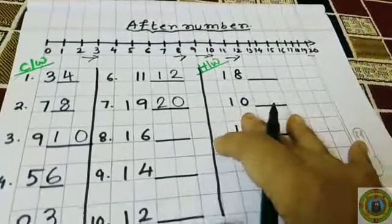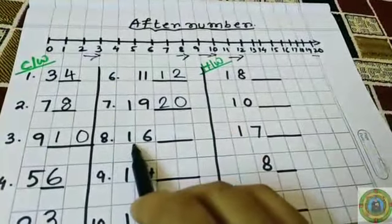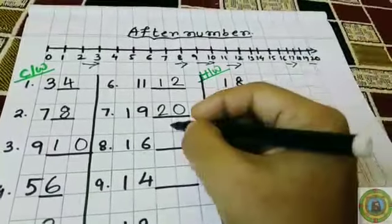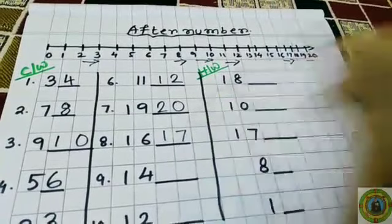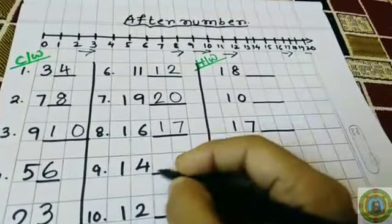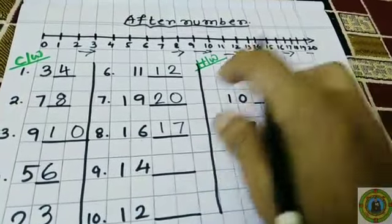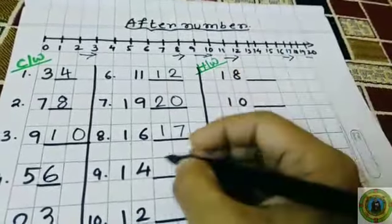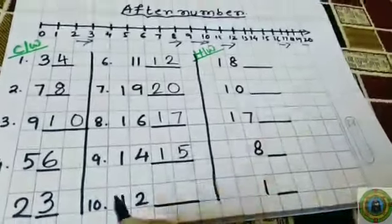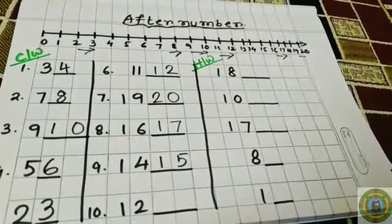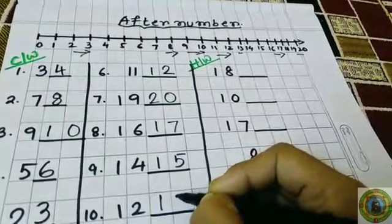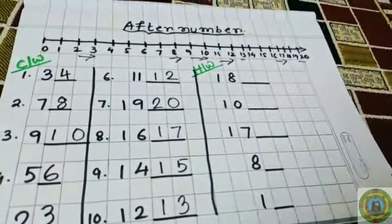Question 8: What comes after 16? The answer is 17. Question number 9: What comes after 14? The answer is 15. What comes after 12? The answer is 13. So we have to write 13.